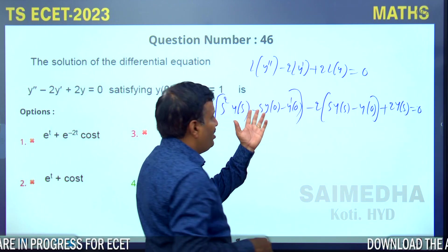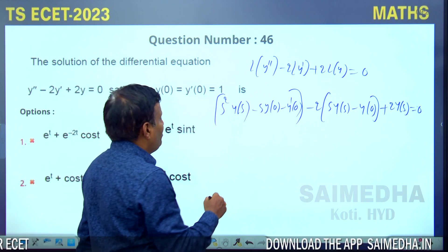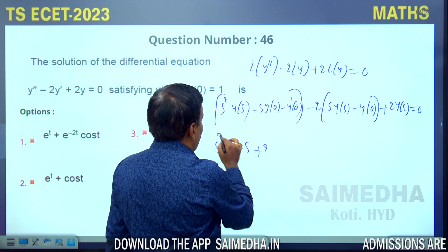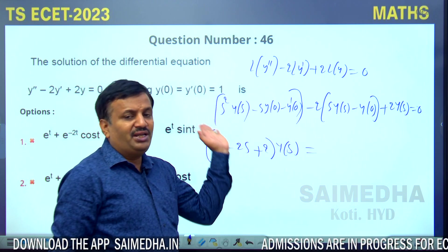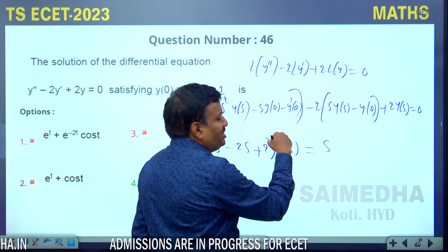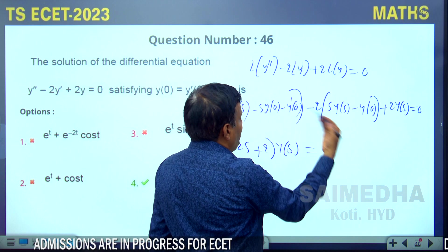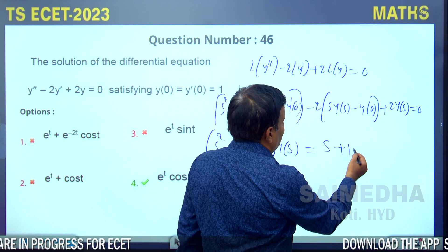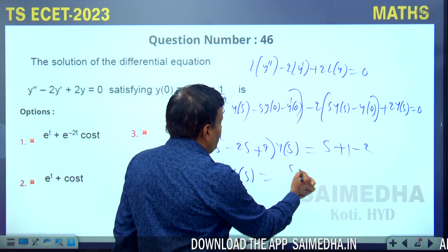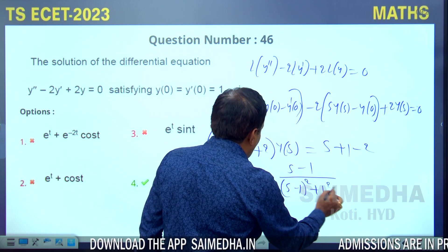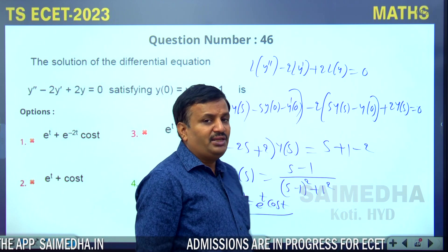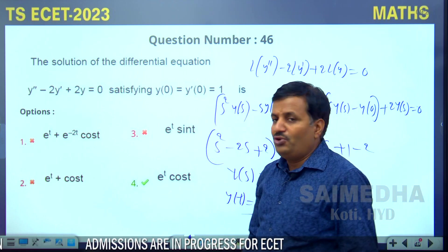Collecting Y(s) terms: (s²-2s+2)Y(s) = s-1. So Y(s) = (s-1)/((s-1)²+1). The inverse Laplace transform gives y(t) = e^t·cos(t). The correct answer is option 4, e^t·cos t.